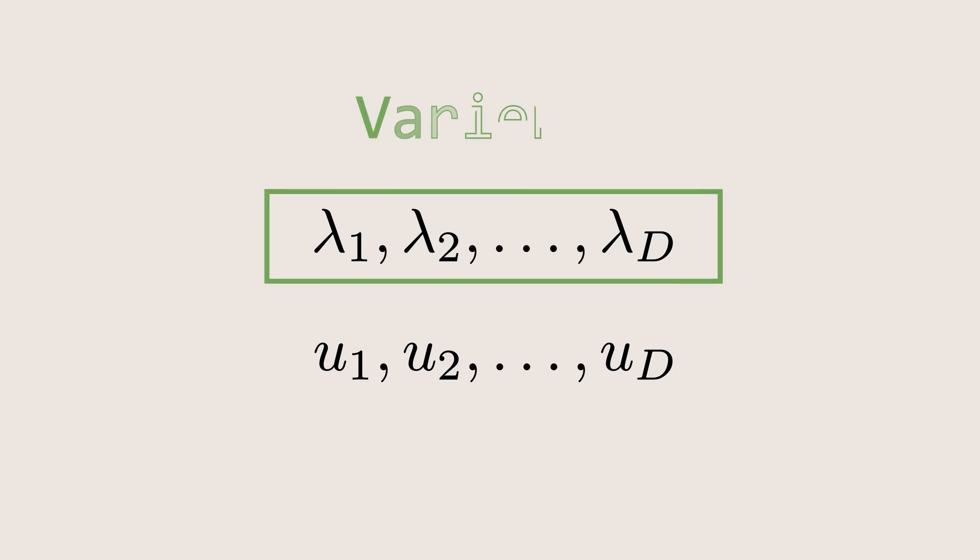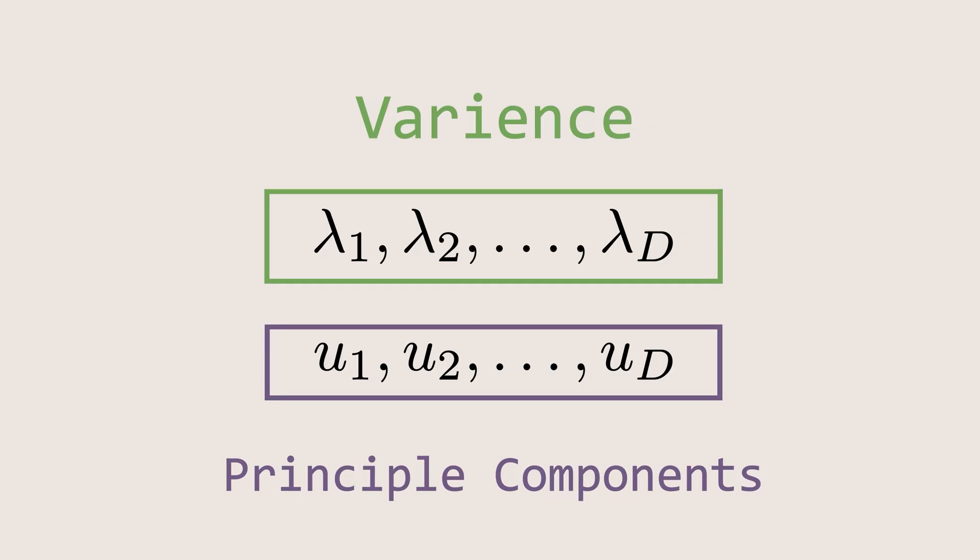These lambdas represent the variances sorted from highest to lowest. The corresponding unit vectors are the principal components associated with those variances.